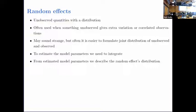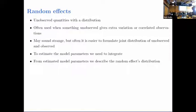Here comes the part that may sound a little strange at first: it's actually very often easier to describe the distribution of the unobserved random effect jointly with what we observe, than to describe the resulting marginal distribution of what we observe alone. In order to estimate it, we need to do integration, and from the estimated model parameters we look at the conditional distribution of the random effects given our observations.